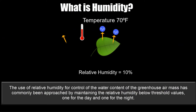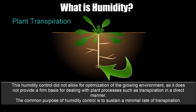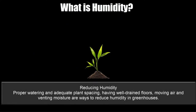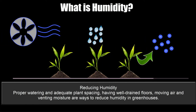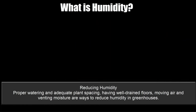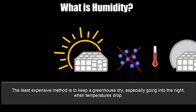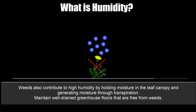The use of relative humidity for control of the water content of the greenhouse air mass has commonly been approached by maintaining the relative humidity below threshold values — one for the day and one for the night. This humidity control does not allow for optimization of the growing environment as it does not provide a firm basis for dealing with plant processes such as transpiration in a direct manner. The common purpose of humidity control is to sustain a minimal rate of transpiration. Reducing humidity through proper watering, adequate plant spacing, well-drained floors, moving air, and venting moisture are ways to reduce humidity in greenhouses.